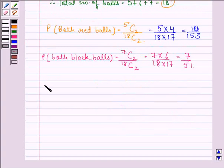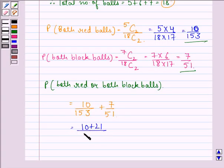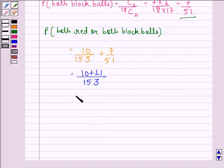Hence, the probability that both are red or both black balls is given by adding these two probabilities. That is equal to 10 divided by 153 plus 7 divided by 51. That is equal to 10 plus 21 divided by 153. And that is equal to 31 divided by 153.